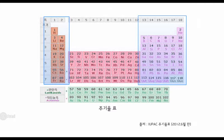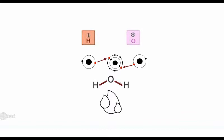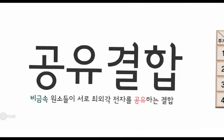각 원소들은 최외각 전자를 8개로 채워 안정해지기 위해 다른 원자들과 결합을 하게 됩니다. 예를 들어 1족의 수소와 16족의 산소를 봤을 때 산소는 최외각 전자가 6개로 2개가 더 있으면 안정해지게 됩니다. 그리하여 수소원자 2개로부터 각각 전자 하나씩을 서로 공유하는 형태로 결합을 하게 됩니다. 이때 모든 원자가 최외각 전자를 꽉 채우게 되어 안정한 형태를 가지게 됩니다. 이러한 결합을 바로 공유결합이라고 합니다.